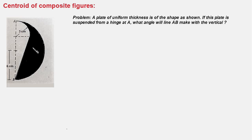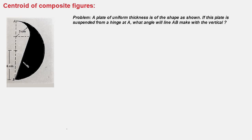Our first task is to find the coordinates of the centroid of this area — this plate. First we have to decide how to construct this shape from basic geometrical shapes. One can think of this shape as constructed from a semicircle, and then from that area we take out a quarter circle and a triangle, and what we are left with is the shape of the plate.